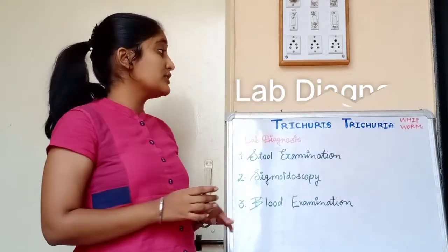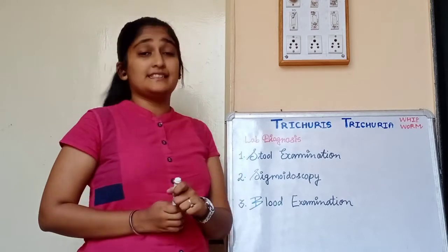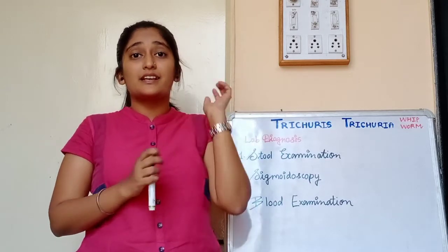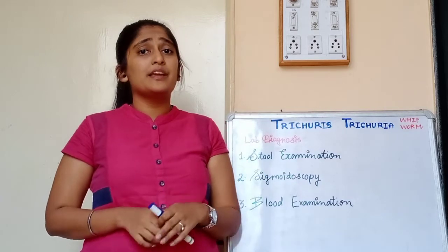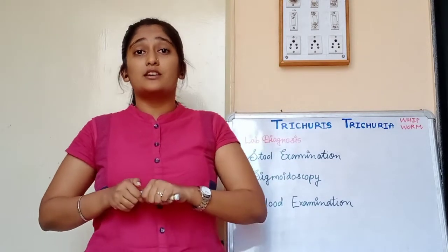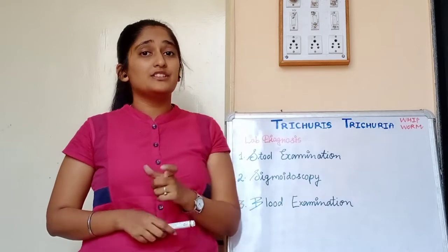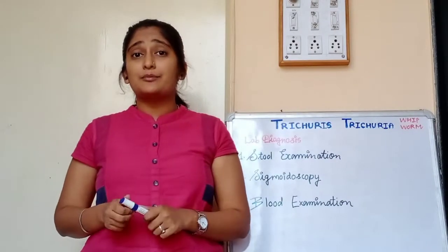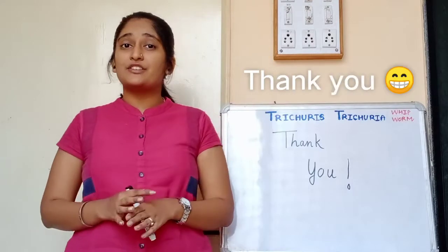For lab diagnosis of Trichuris trichiura, stool examination, sigmoidoscopy, and blood examination are performed. On stool examination, we can find the worms, and Charcot-Leyden crystals may also be present if the patient has whipworm dysentery. In the differential leukocyte count, 25% eosinophilia will be shown.